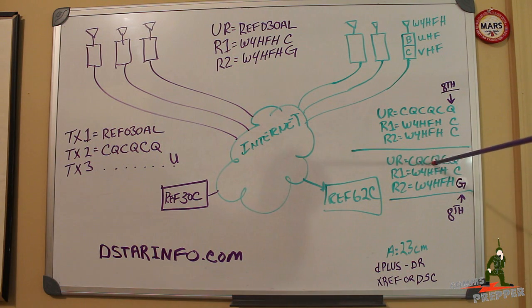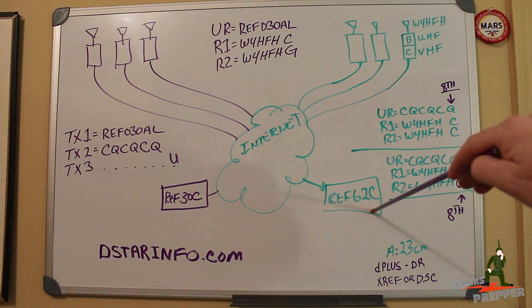UR call, CQCQCQ. Of course, R1, I'm connecting into that VHF node there. So I would put W4HFH, 8th position C, but then in the line 2, the R2 line, I put W4HFHG in the 8th position for gateway. Now, any of my transmissions picked up by this local VHF repeater, not only broadcast out over the antenna, but they're also routed to the internet to the reflector it's connected to.